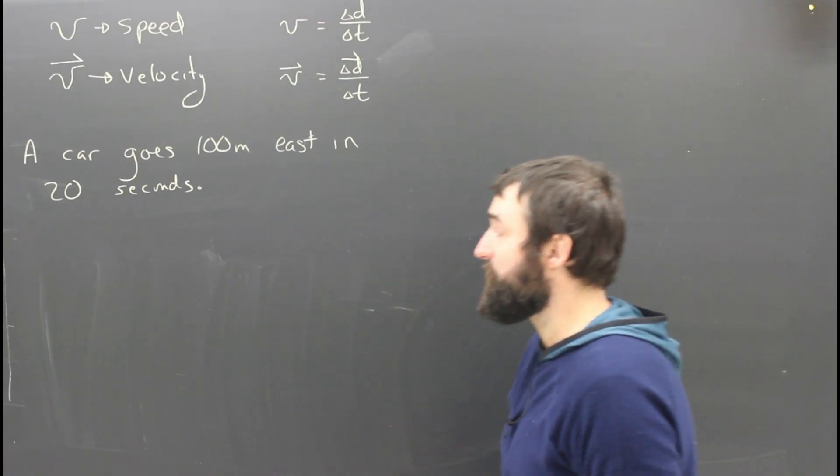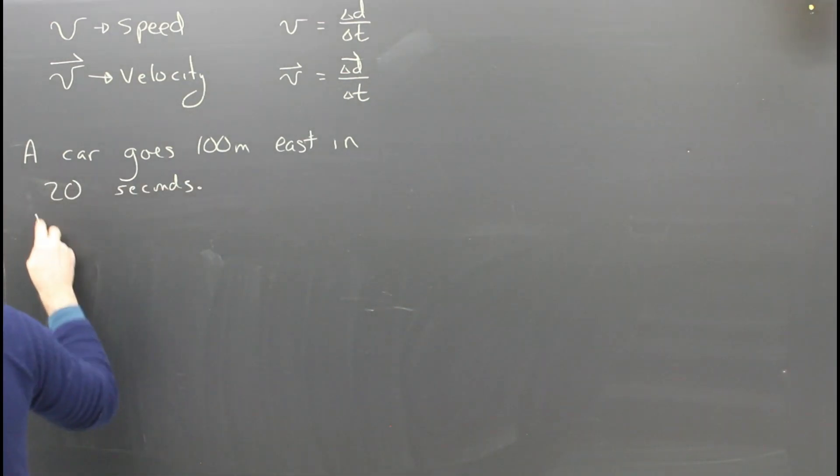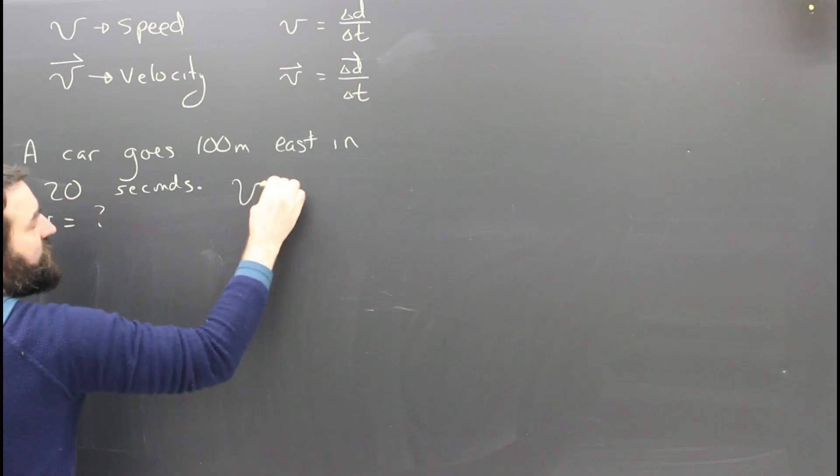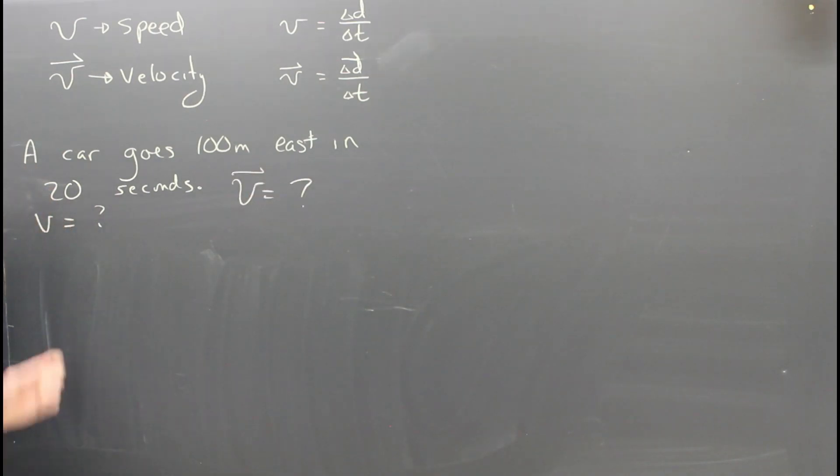A car goes 100 meters east in 20 seconds. What is the car's speed and what is the car's velocity? To find its speed, I'm going to write down the givens. 100 meters is how far it went. That's the distance. And 20 seconds is how long it took. That's the time.